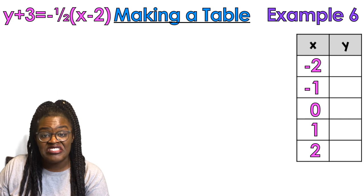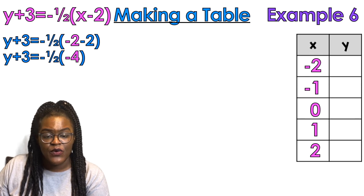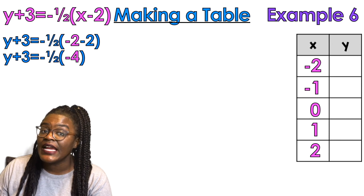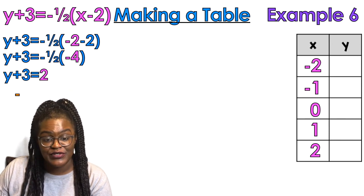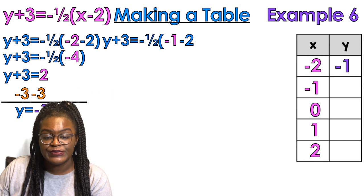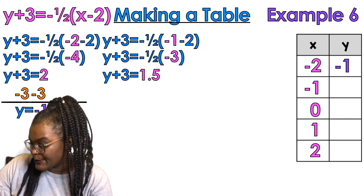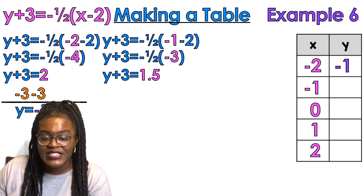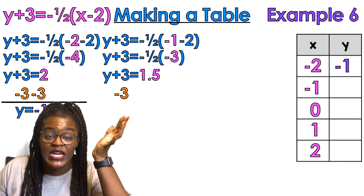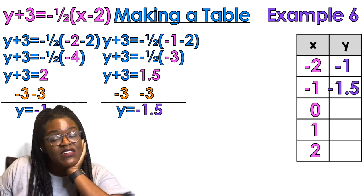Last but not least, example number 6. We're plugging in negative 2 minus 2, which is negative 4. What's half of 4? Half of 4 is 2. A negative times a negative is a positive — so positive 2 — subtract 3 from both sides, y equals negative 1. Now plugging in negative 1: half of 3 is 1.5, positive because negative times negative is positive — subtract 3 from both sides — y equals negative 1.5.